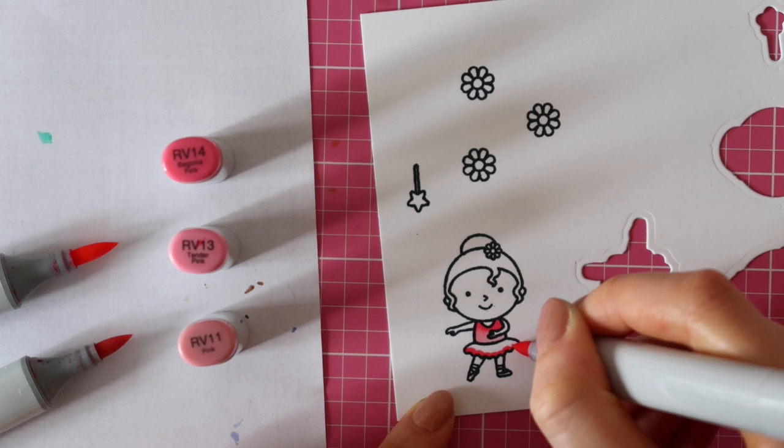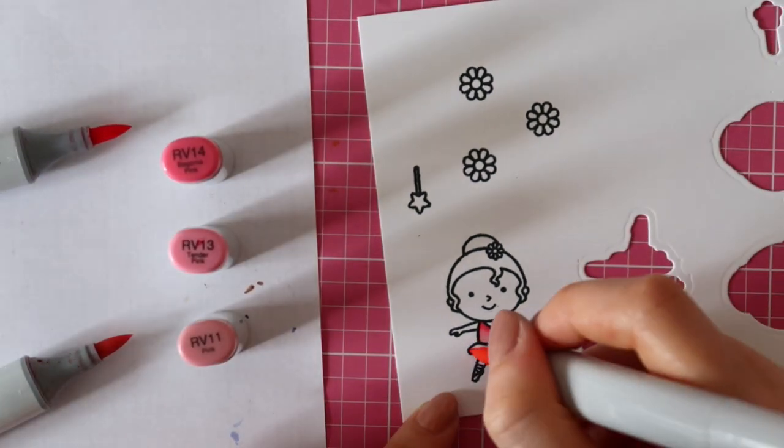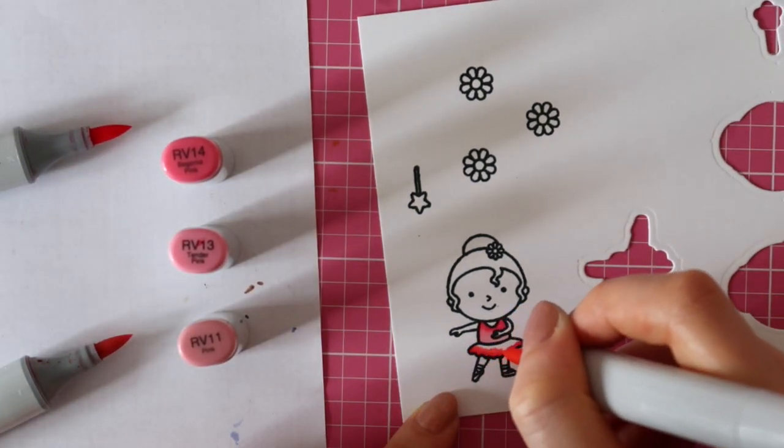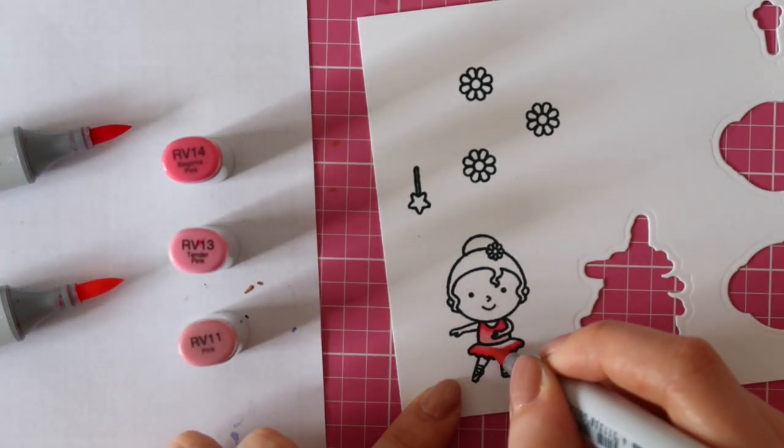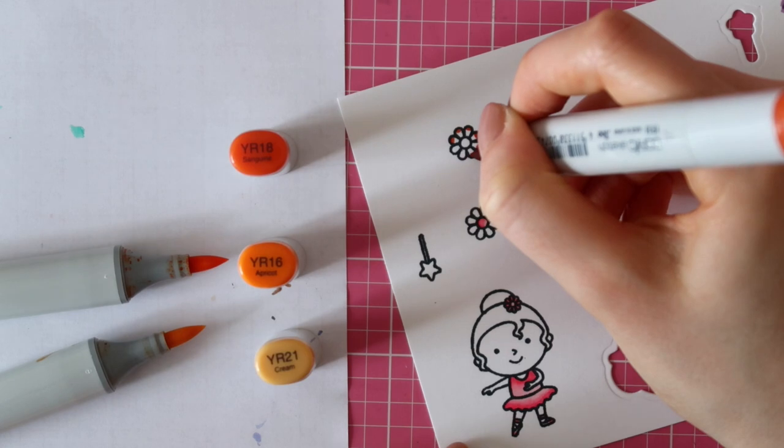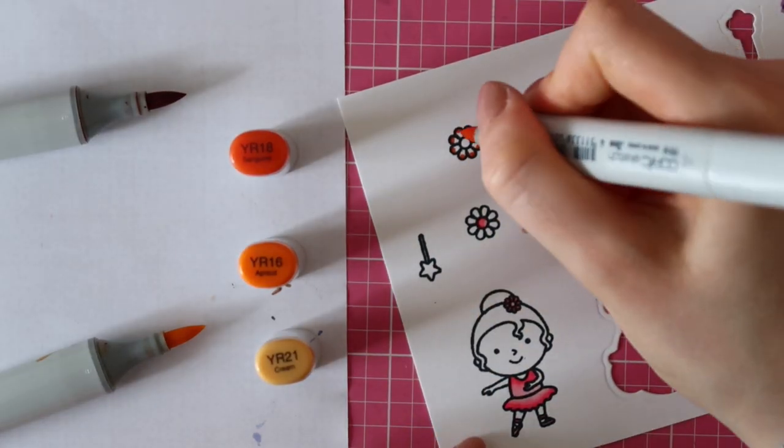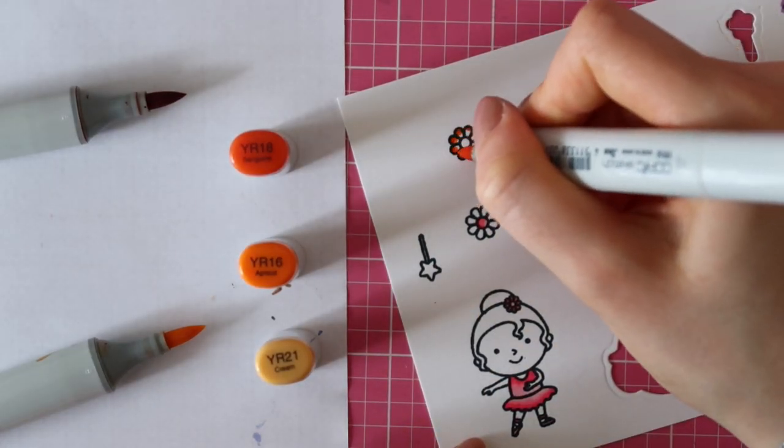These are Copic Sketch markers and I really like to color with them. I also use those pink markers to color the flower in the girl's hair and to color her shoes.